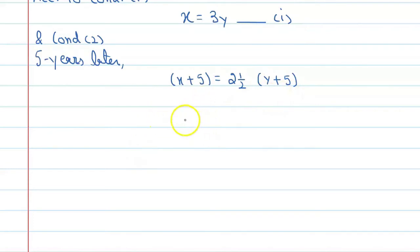So see, we will simplify this. Then we will get x plus 5 equal to 5 upon 2 times y plus 5. It is a mixed fraction. So cross multiply it. Then you will get 2x plus 10 equal to 5y plus 25.